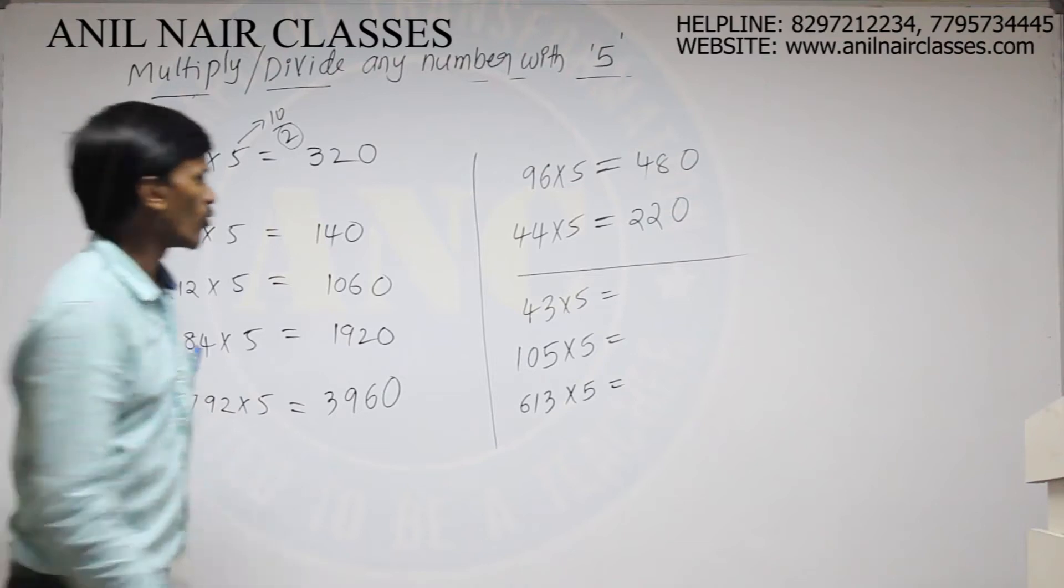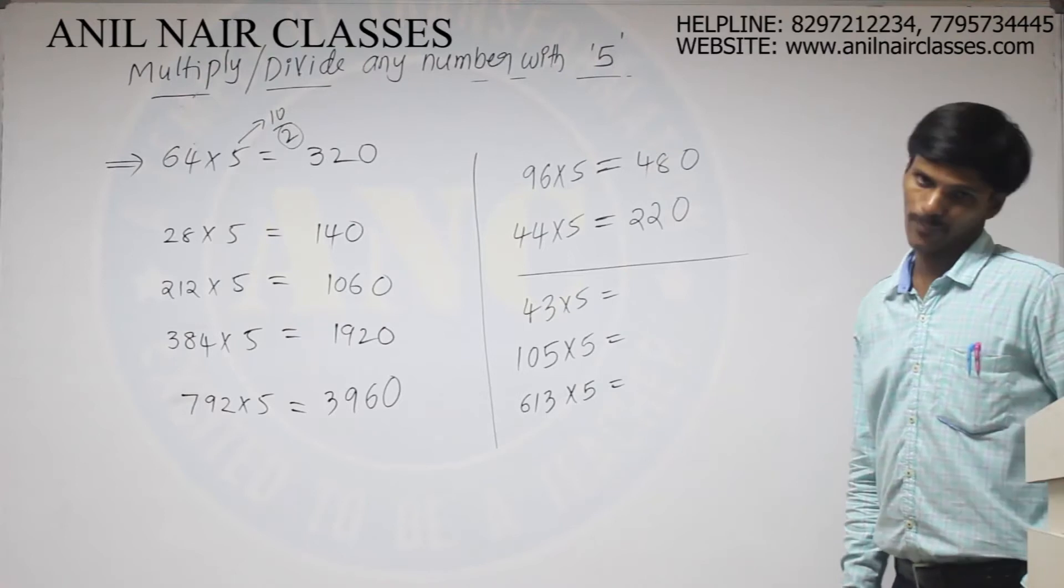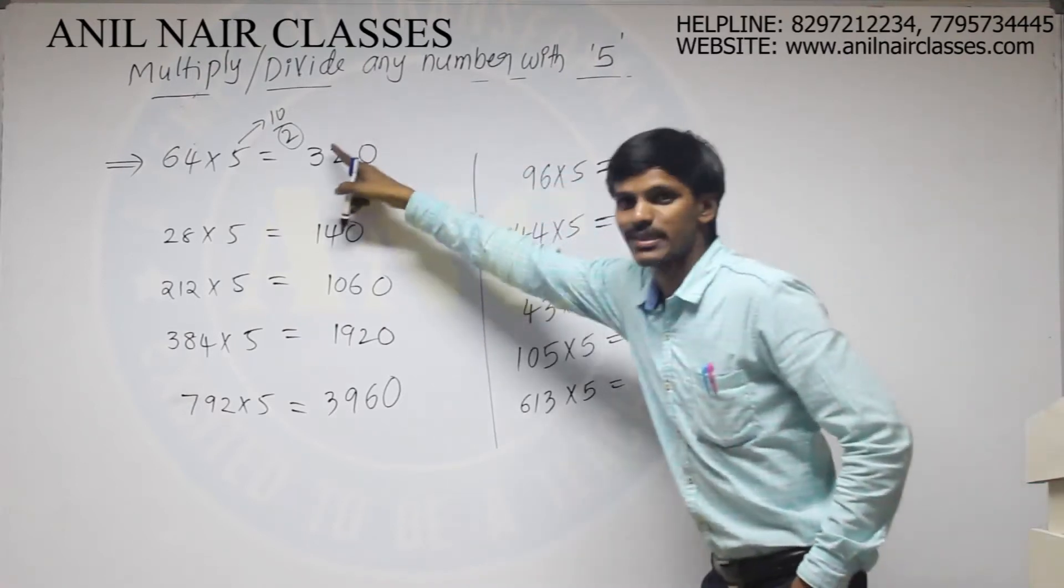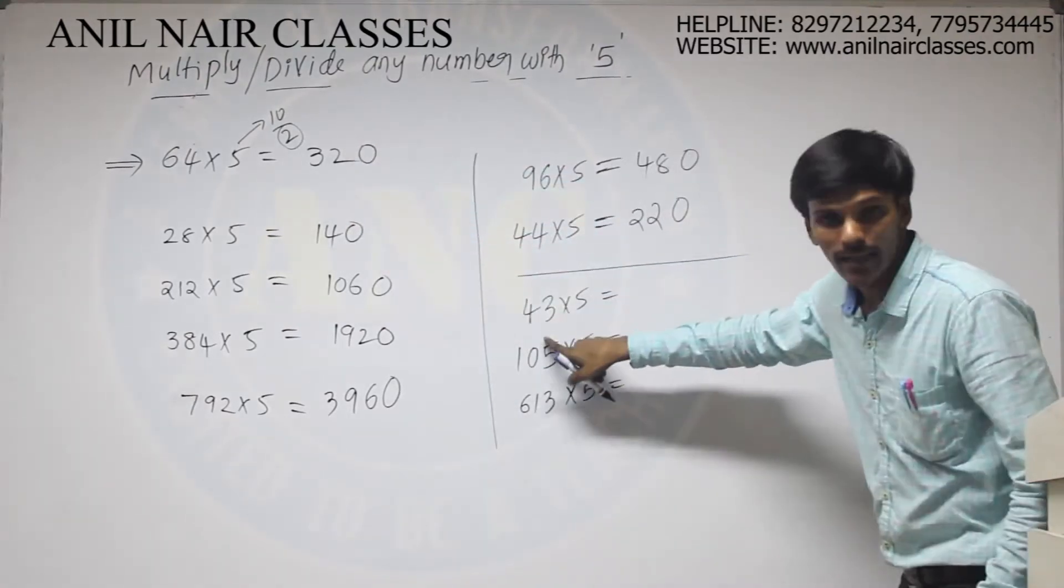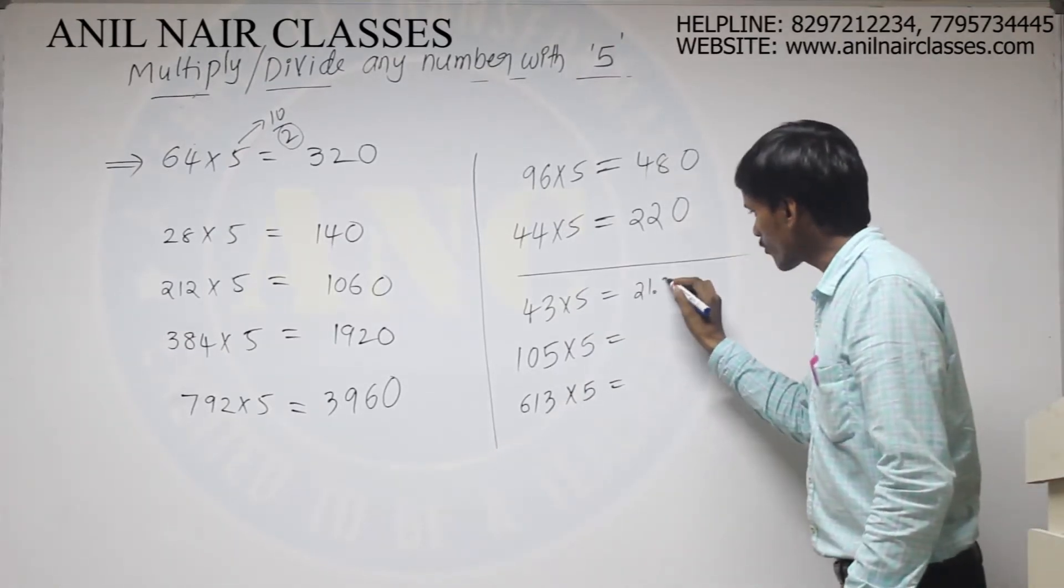Multiplication of 5 with the even numbers only. If odd numbers are there, then what will happen? Generally, if you follow my method, what you will do? Divide this. 43 or 45, it will be 21.5.